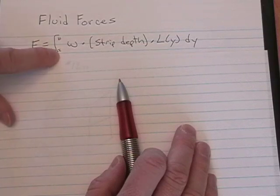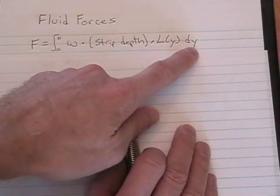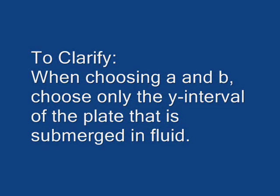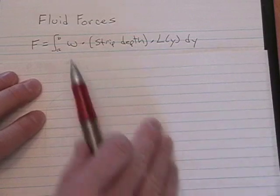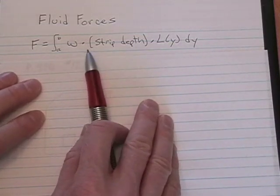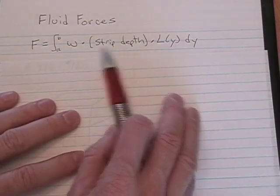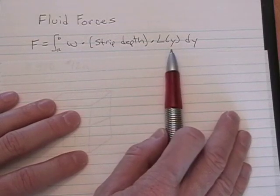Now, A and B are the Y values of the plate, of the interval that the plate covers, not the depth of the water. So it's the integral from A to B, the weight density, times the depth of a typical strip, which is of course an expression that involves Y, times L of Y, which is another function.